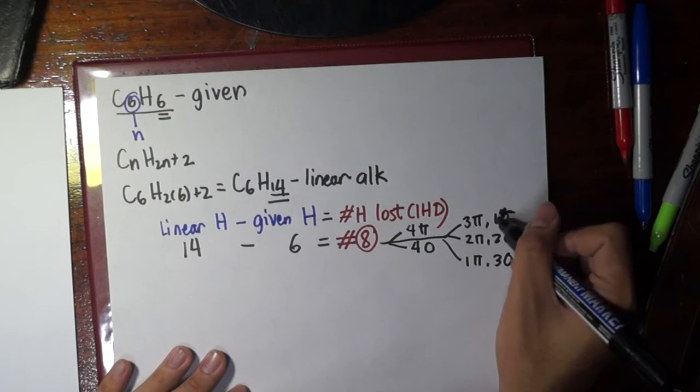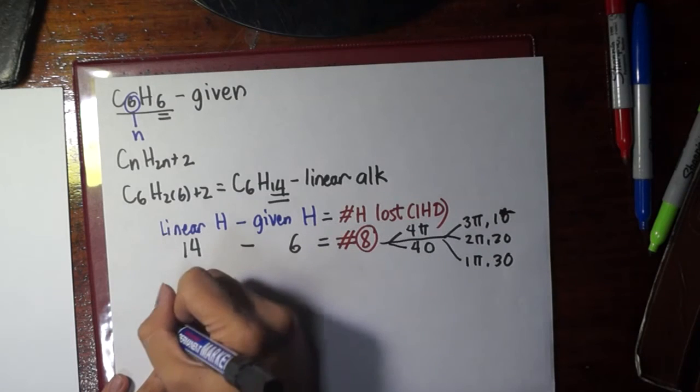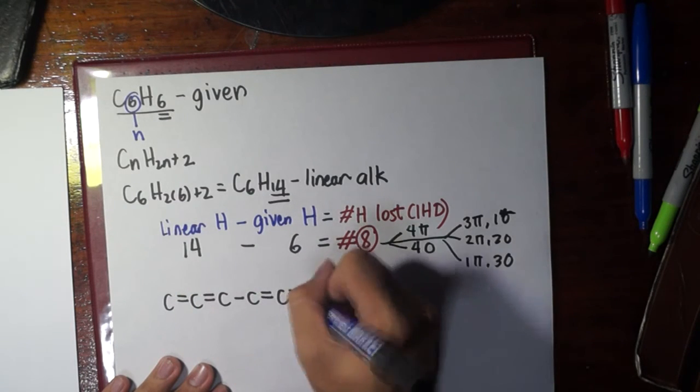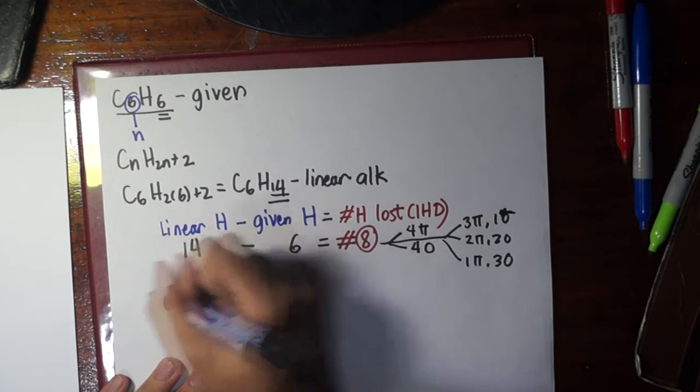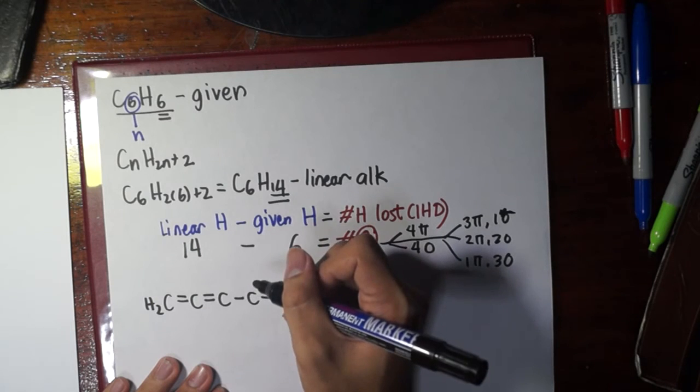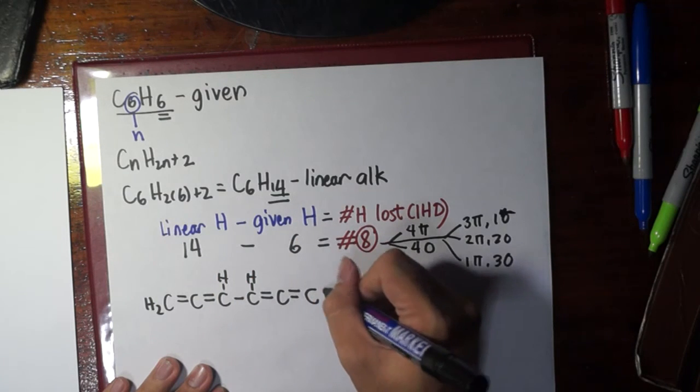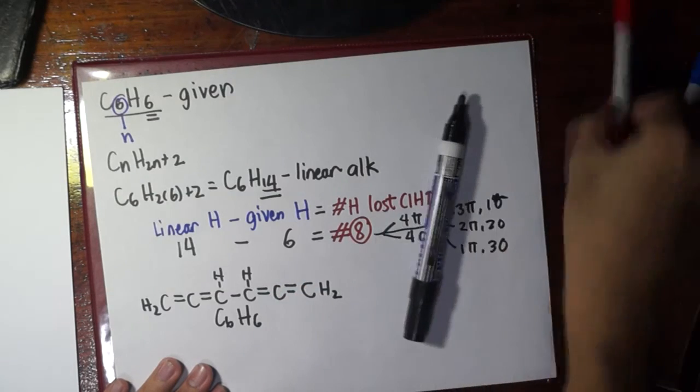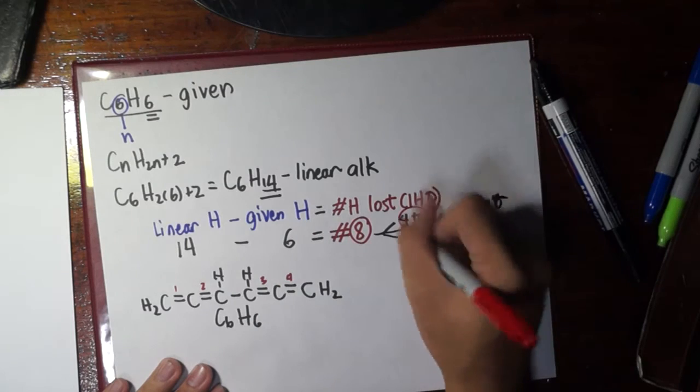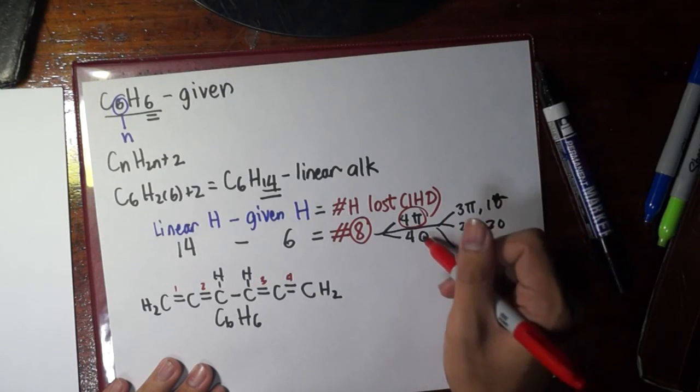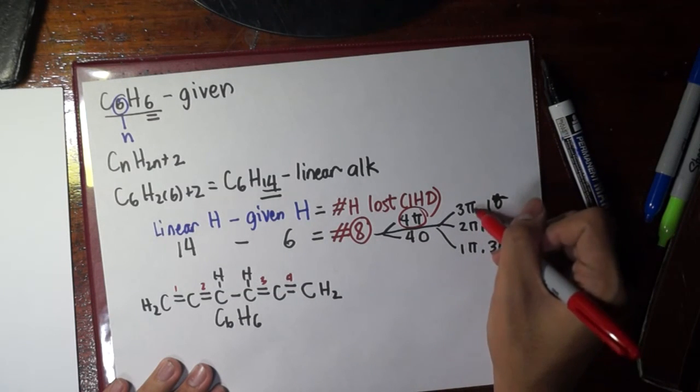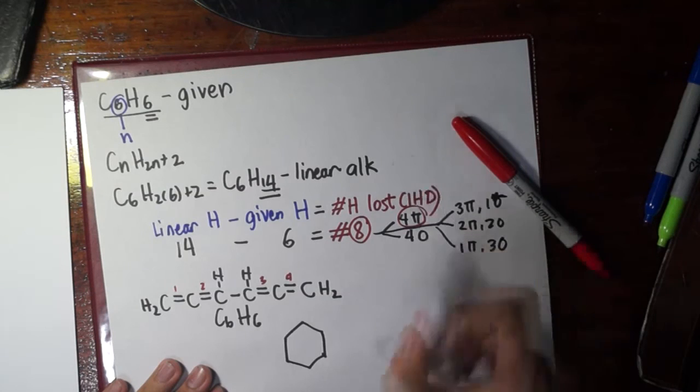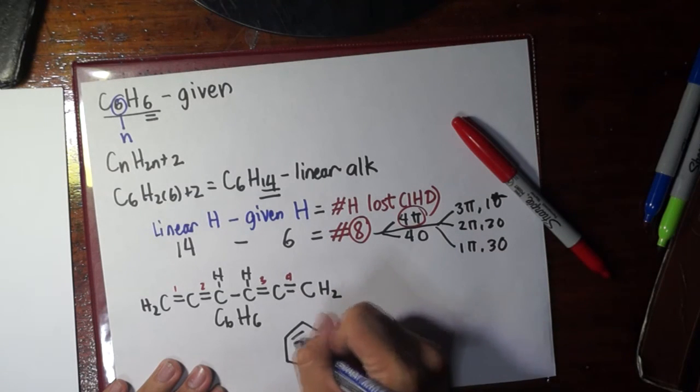So, for example, we could try this one, 4 pi bonds. Let's try to draw something like that. Let's accumulate all of that. So, here, let's complete the number of hydrogens. So, this is a possible structure for C6H6. And, again, we have here 1, 2, 3, 4 pi bonds. I think it would not be possible to have 4 rings. How about a ring and 3 pi bonds? Actually, that is very possible. For example, like that, and 3 pi bonds. It's possible.